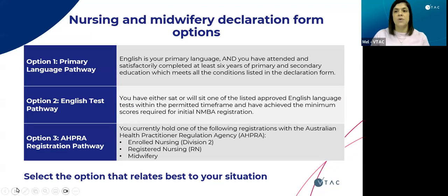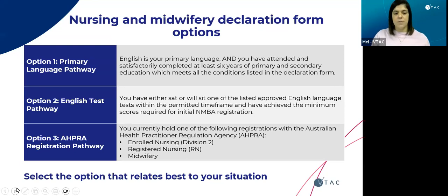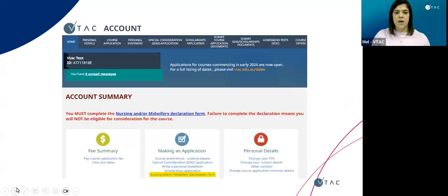There are three options for the nursing and midwifery declaration form. Option one is the primary language pathway — if English is your primary language and you've attended and completed six years of primary and secondary schooling. Option two is the English test pathway — where you have either sat or are planning to sit an approved English language test. Option three is the APRA registration pathway — if you currently hold one of the relevant registrations. The red notification in the application form lets you know this must be completed, and the red bar will remain in your account until you complete the form.